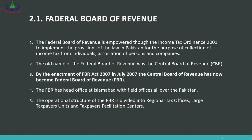The operational structure of the FBR is divided into Regional Tax Offices, Large Taxpayer Units, and Taxpayer Facilitation Centers. Regional Tax Offices are in large cities; Large Taxpayer Units are in mega cities like Lahore, Karachi, and Islamabad; and Taxpayer Facilitation Centers are in smaller cities so people can go there, get information about tax, ask questions, and submit their tax returns.